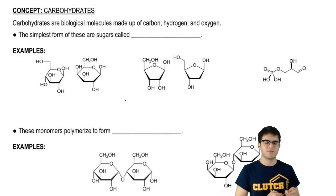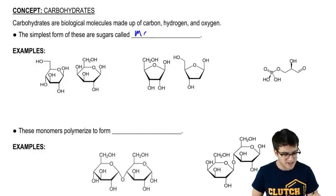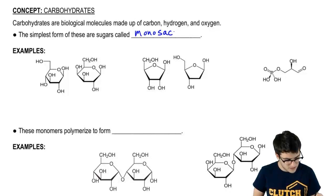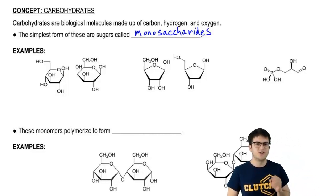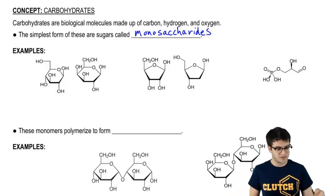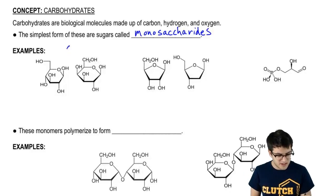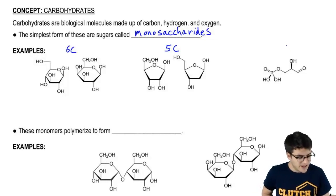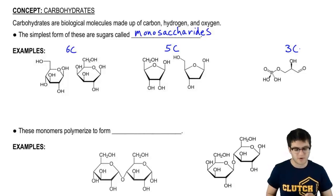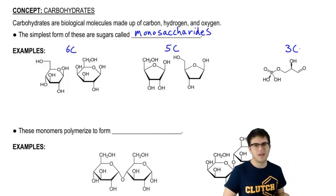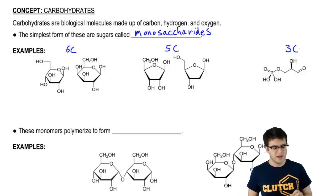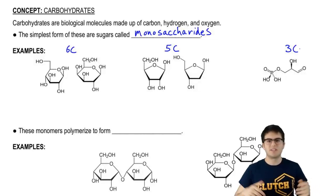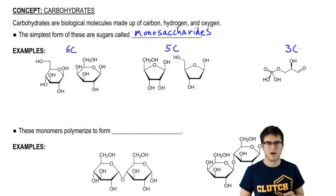Now the simplest form of these are sugars called monosaccharides. Monosaccharides generally come in three forms: a six carbon form, a five carbon form, and a three carbon form. These are the most stable confirmations for monosaccharides.